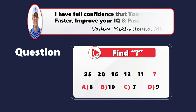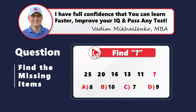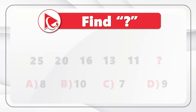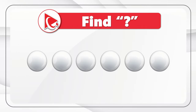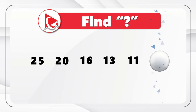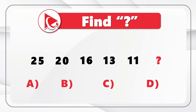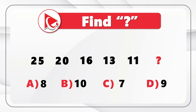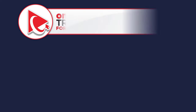I enjoy solving pattern questions because they are easy to understand but sometimes not so easy to solve. We are presented with a sequence of numbers and need to find the missing number, which is next in the sequence. The numbers are 25, 20, 16, 13, 11, and then comes the missing number. You need to calculate it out of four possible choices: Choice A is 8, Choice B is 10, Choice C is 7, and Choice D is 9. Take a close look to see if you can calculate the solution. It looks confusing, but believe me, there is hope at the end of the tunnel.